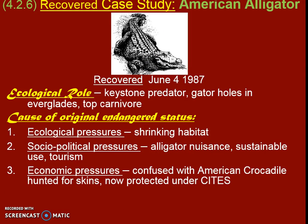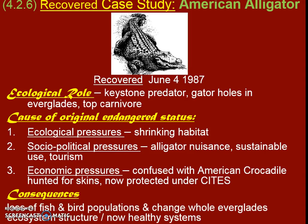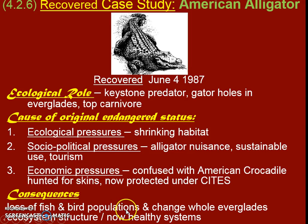Economically, the American alligator was hunted for its skins — it could be confused with the American crocodile — but it's now protected under CITES. If someone is found poaching and skinning them to make handbags or shoes, they can now be fined under the CITES trade law, which helped protect them significantly. When they were decreasing, as a keystone predator, a lot of bad things happened — there was a loss of bird and fish populations because there was no predator to keep everything in check. The whole Everglades ecosystem is now healthy again because these alligators are back.